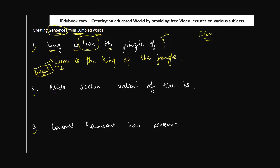Let's see the second sentence: pride Sachin nation of the is. Making any sense? Obviously a big no. But what we know is that Sachin is being talked about. How is Sachin related to the nation? Sachin is the pride of the nation. Can we try and see whether we have all these words here? So Sachin is the pride of nation.